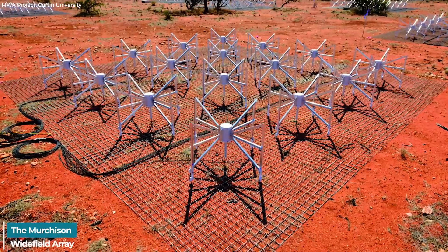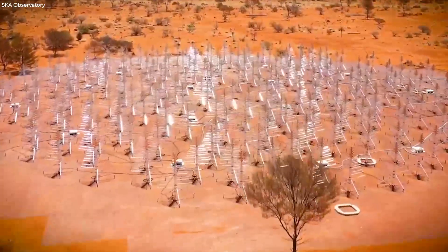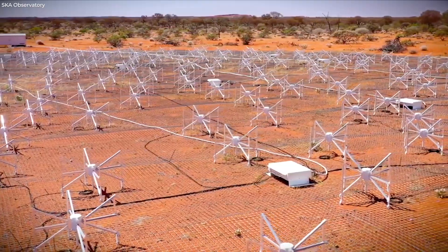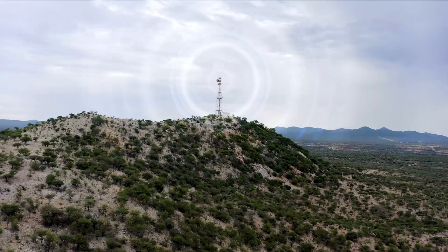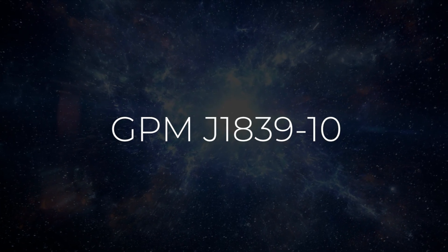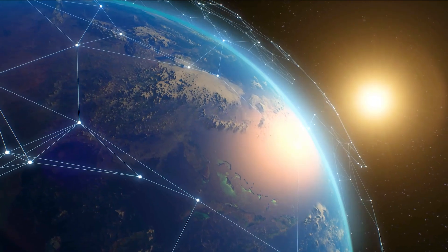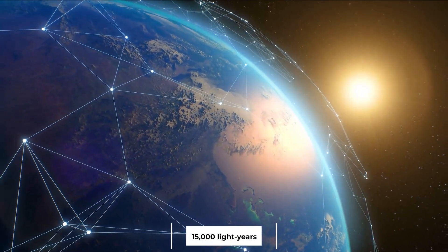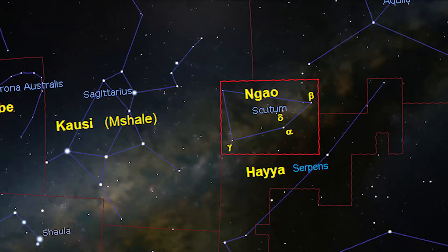The Murchison Widefield Array, a radio telescope covering the Western Australian desert, was the first to pick up this signal. It was identified as GPM J1839-10 and located roughly 15,000 light years away from Earth in the Scutum constellation.